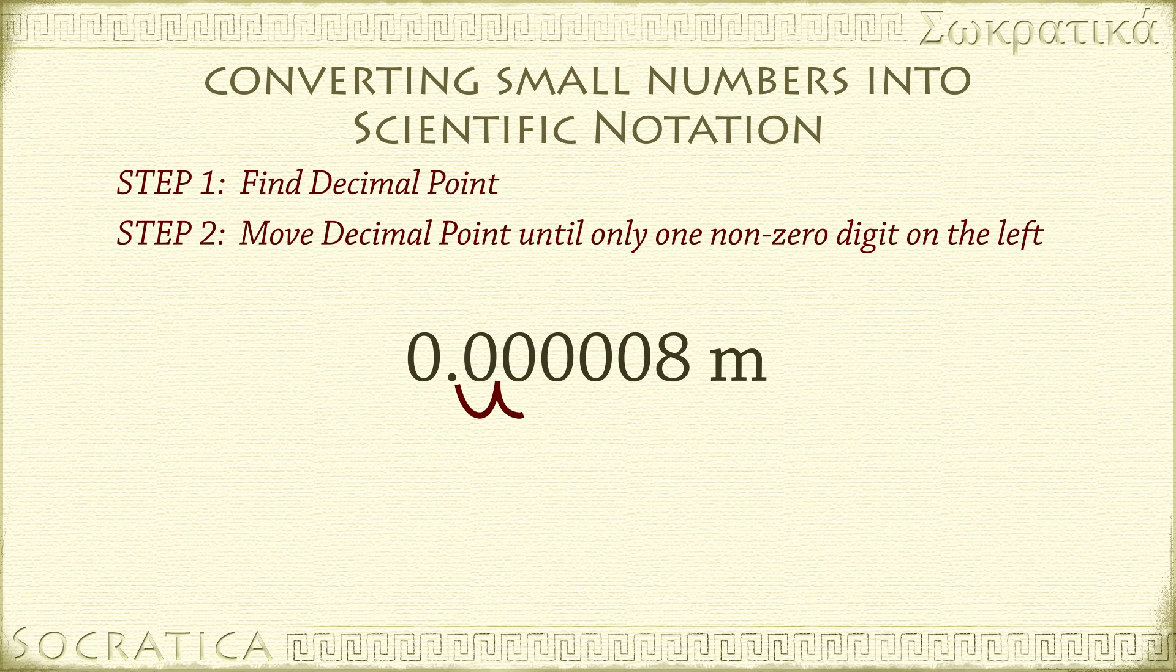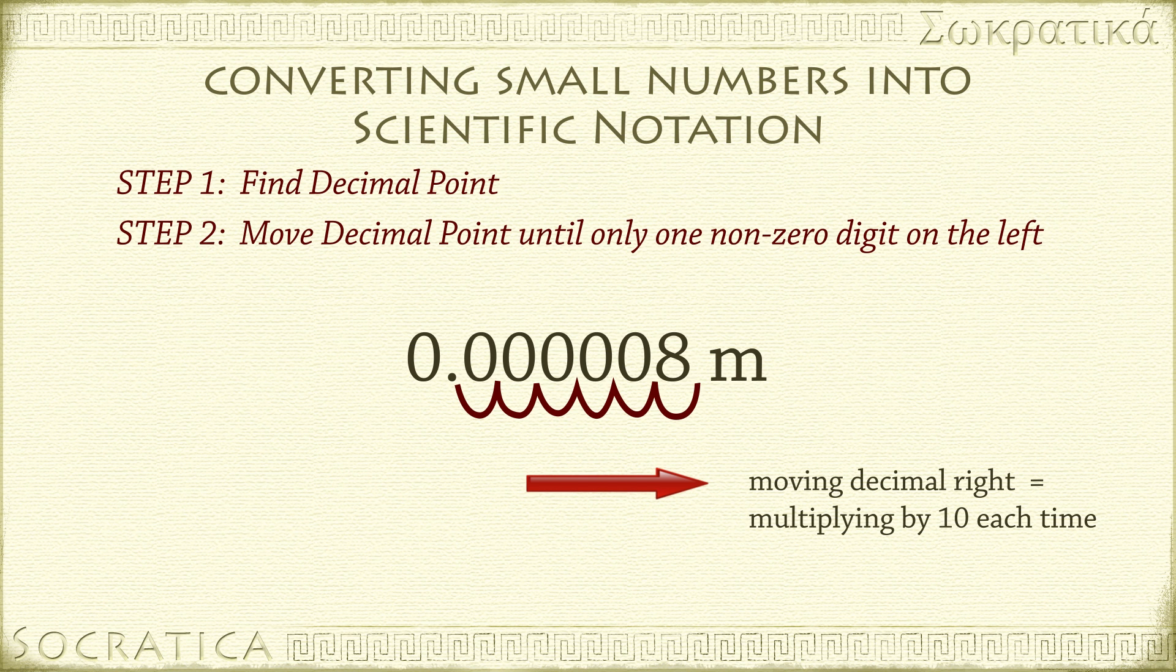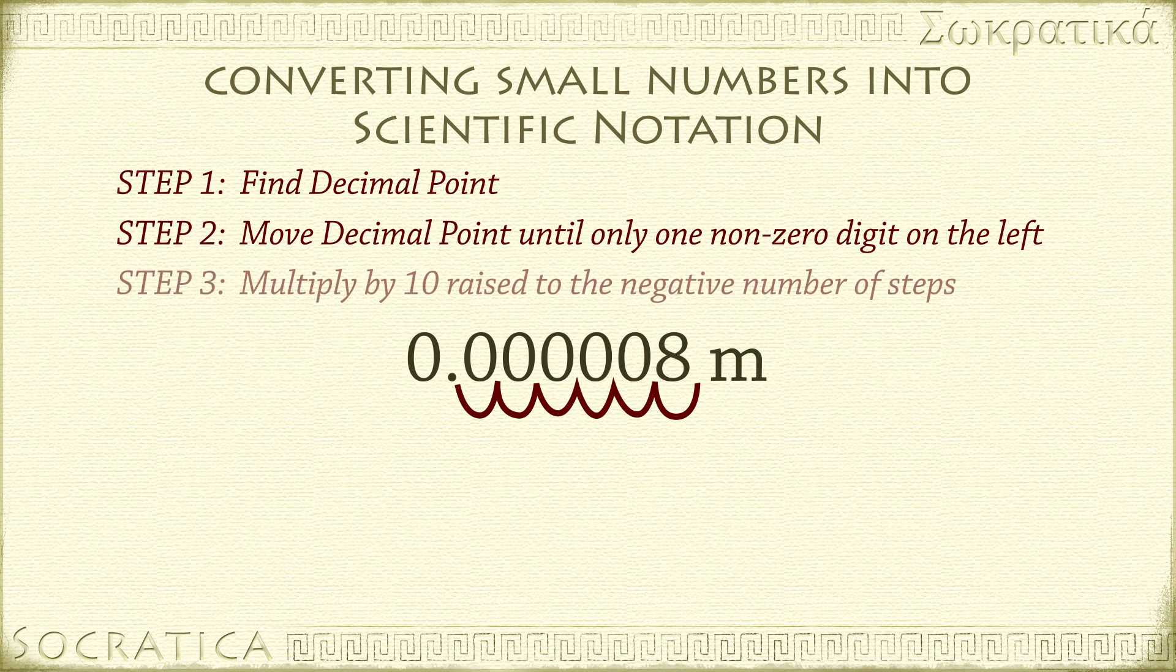1, 2, 3, 4, 5, 6. Notice we're moving the decimal point to the right. Each time we move the decimal point to the right, that's the same as multiplying the number by 10. That means we're going to have to divide the final number by 10 for every step that decimal point takes to the right. Step 3: Write the number and multiply by 10 raised to the negative of the number of steps. So in this case, we get 8 times 10 to the negative 6.